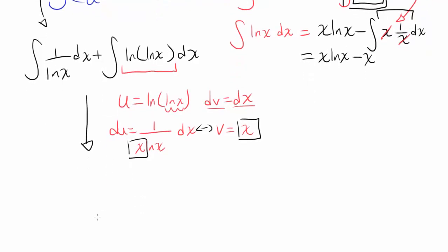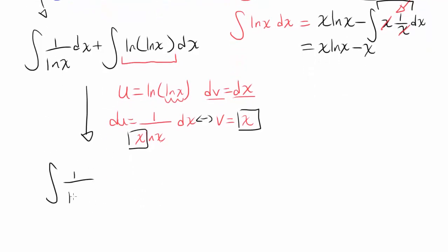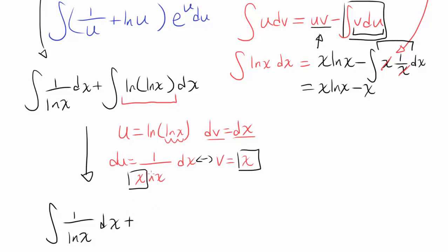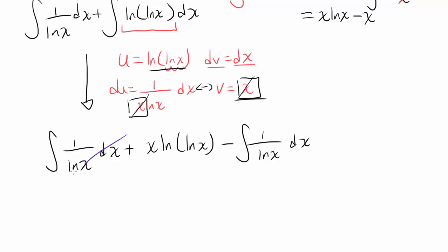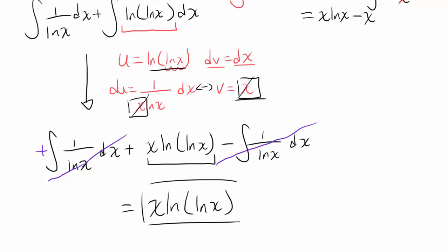In mathematics, when something cancels out you have to smile, because it's usually good. By the integration by parts formula, we have u·v which is x times natural log of natural log of x, minus the integral of v du, which simplifies to the integral of 1 over natural log of x dx. The x's cancel, and we have plus that integral and minus that integral — they cancel out completely. Our answer is simply x times natural log of natural log of x.